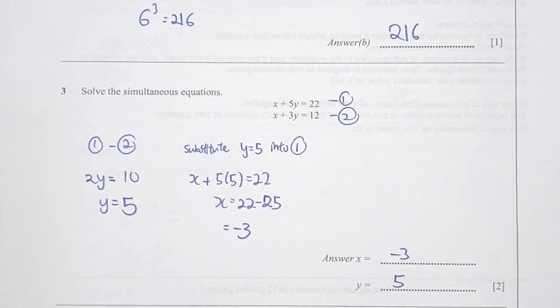Question 3 is a simultaneous equation. I'm using the elimination method where I took equation 1 minus equation 2. The difference gives 2y equals 10, so y equals 5. Substituting y equals 5 into equation 1, you get x equals negative 3.